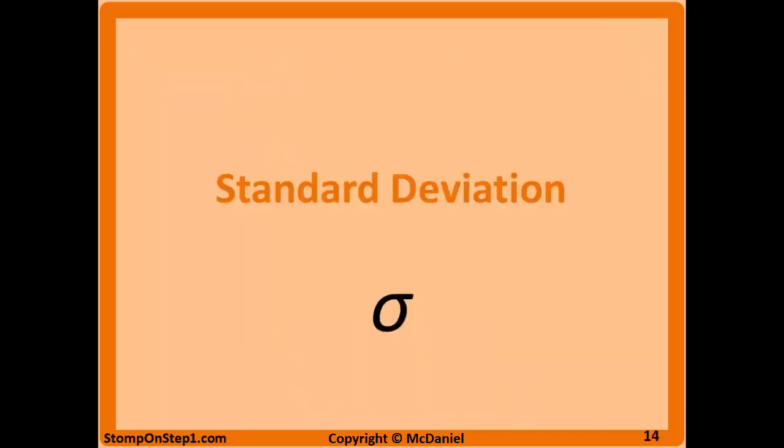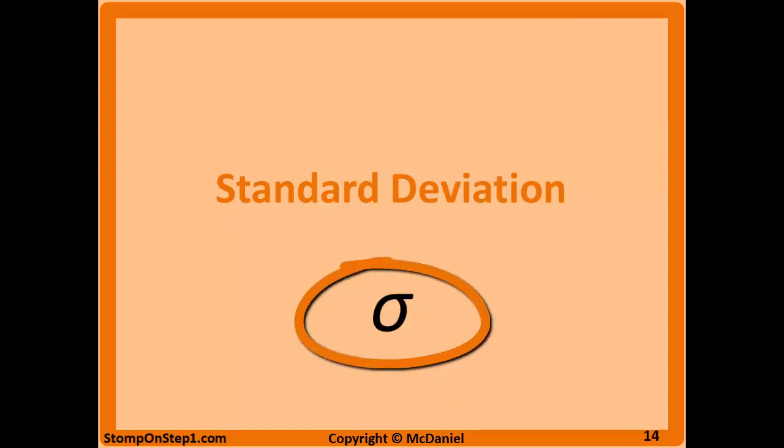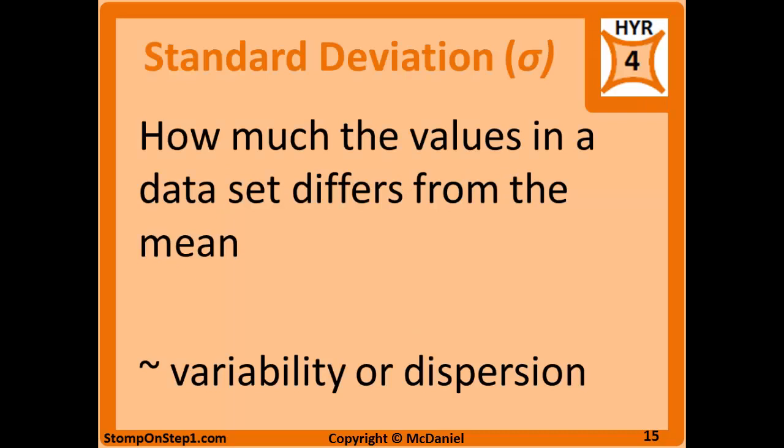Now we can move on to standard deviation, which is given the symbol of sigma. Standard deviation is how much the values in a data set differ from the mean—what's the variability or dispersion of the values in the data set?